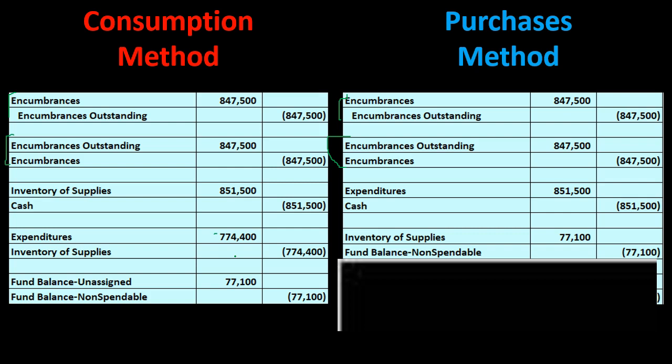Normally you might stop there, as that's where normal accrual accounting would end. However, there is one more transaction needed: we need to designate within the fund balance (assets minus liabilities, the equity section) that a portion is non-spendable. The inventory on the books at end of period is 77,100, and we need to show that this portion of the fund balance already represents assets on hand and therefore cannot be appropriated. This last journal entry is entirely within the equity section — moving an amount from one fund balance account to the non-spendable fund balance account.